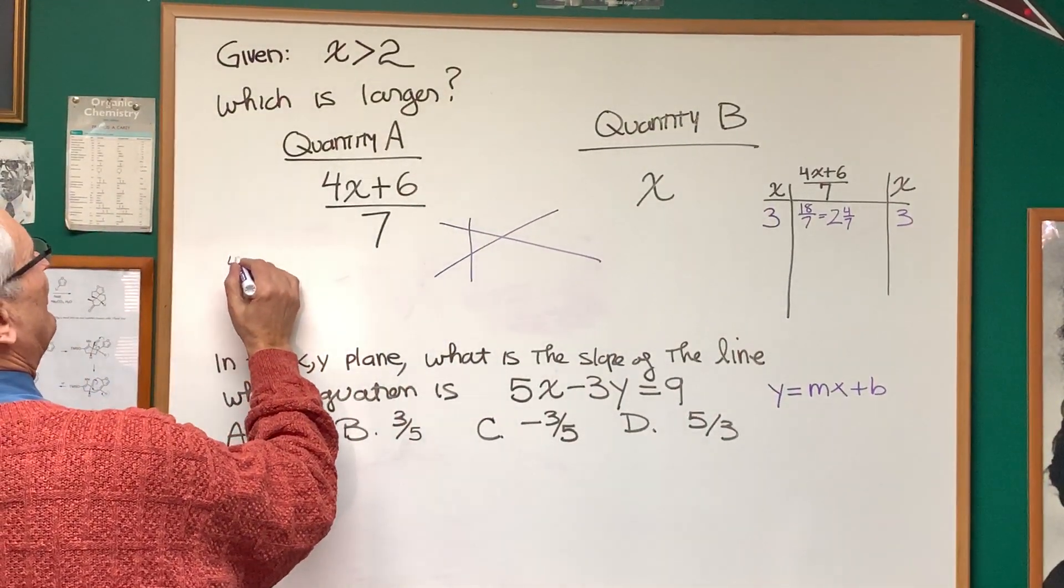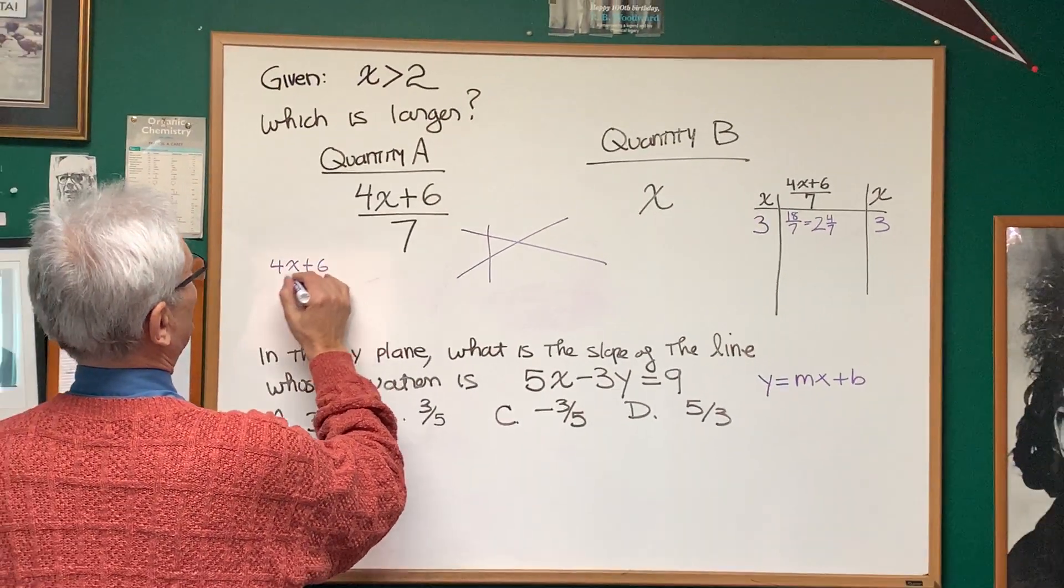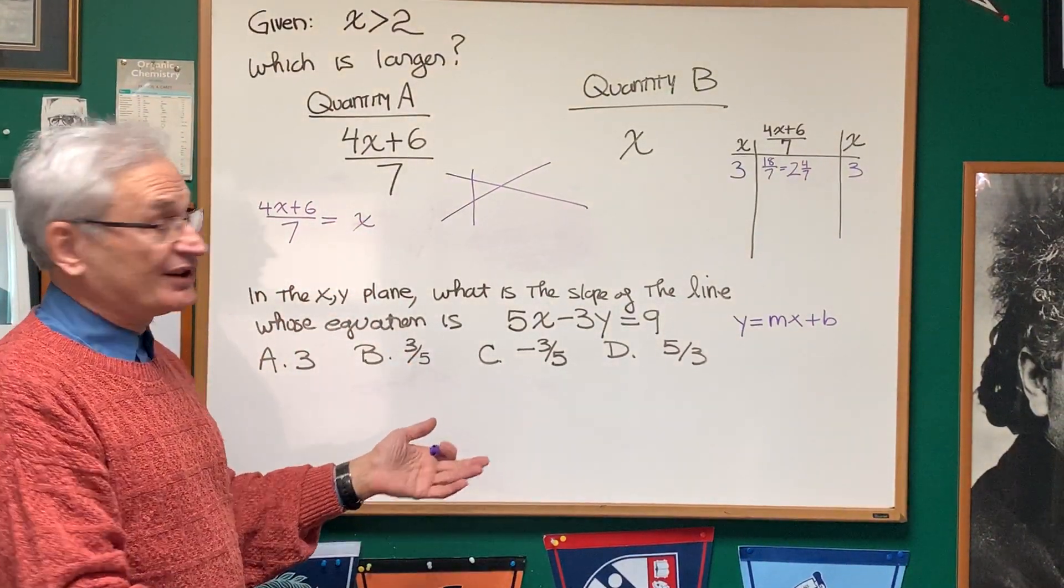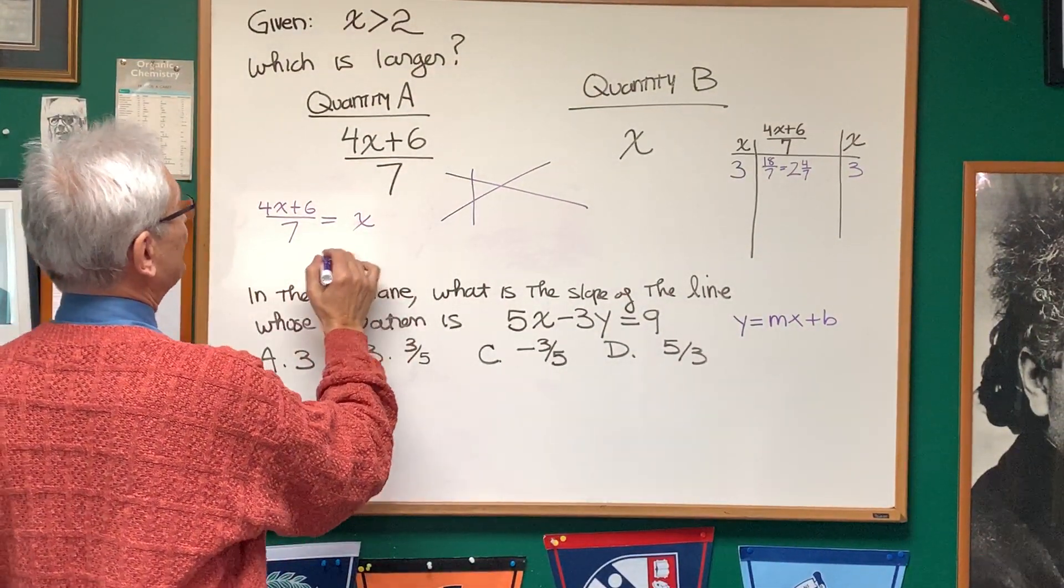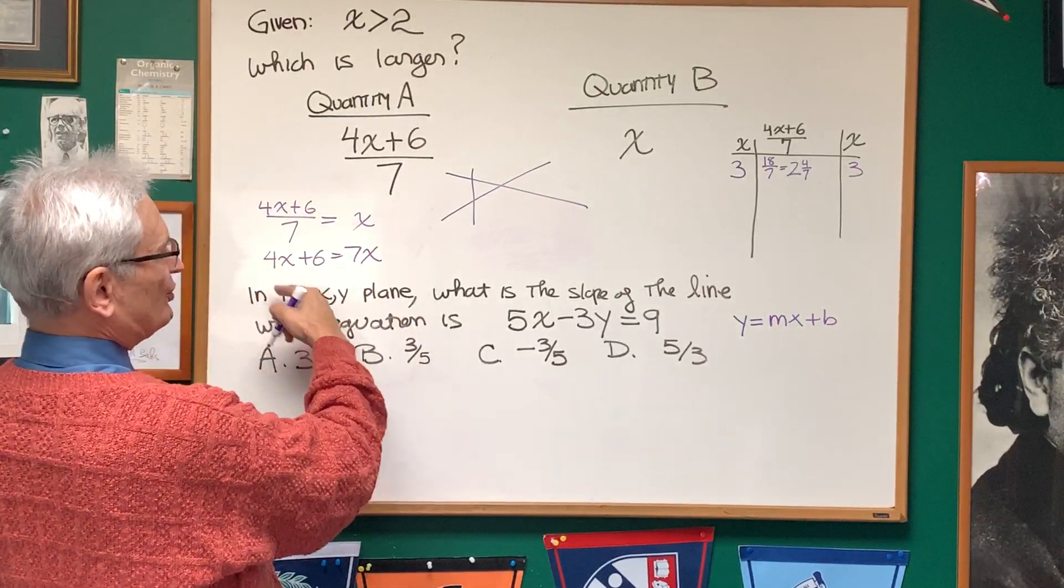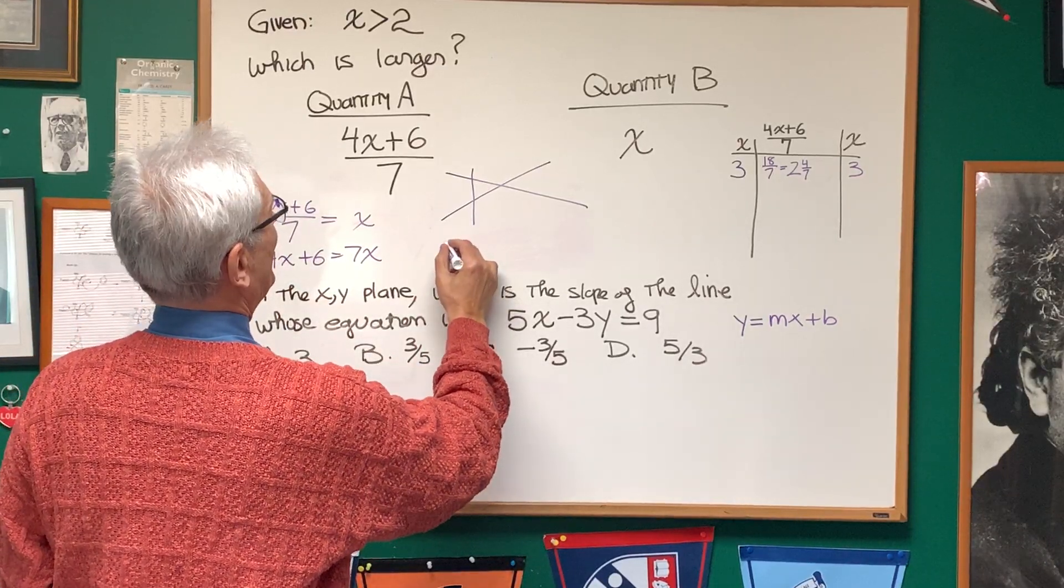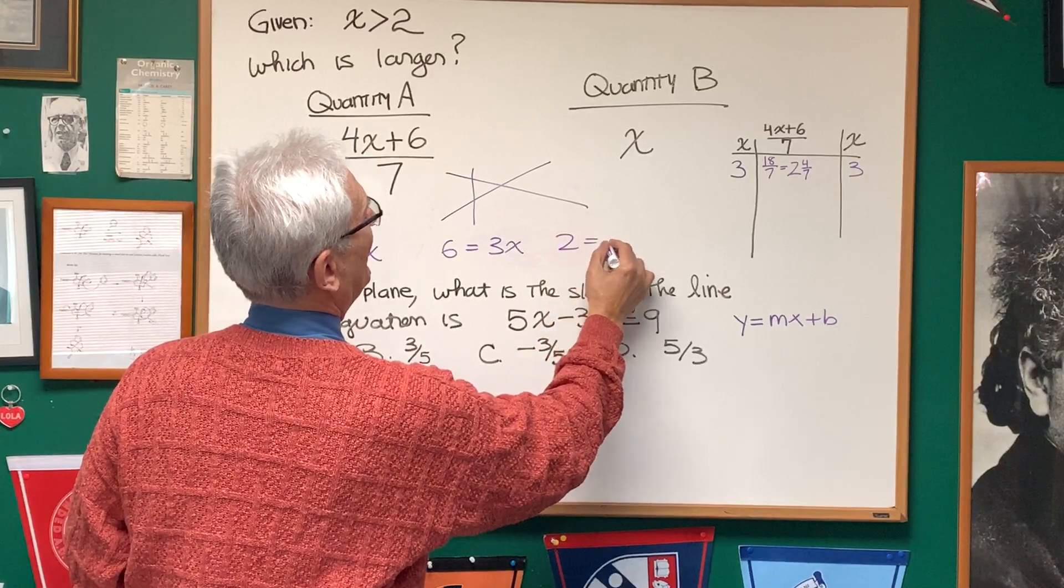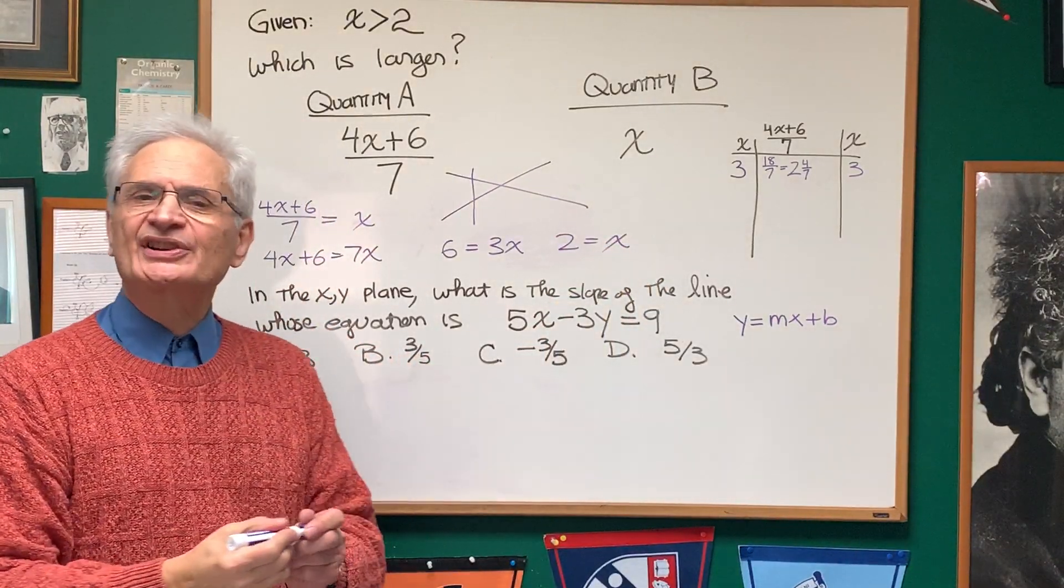So what we're going to do is set the first expression, 4x plus 6 over 7, equal to x. Let's solve for x. Multiply both sides by 7, and we get 4x plus 6 equals 7x. Subtract 4x from both sides, and we'll get 6 equals 3x, and therefore, x equals 2.